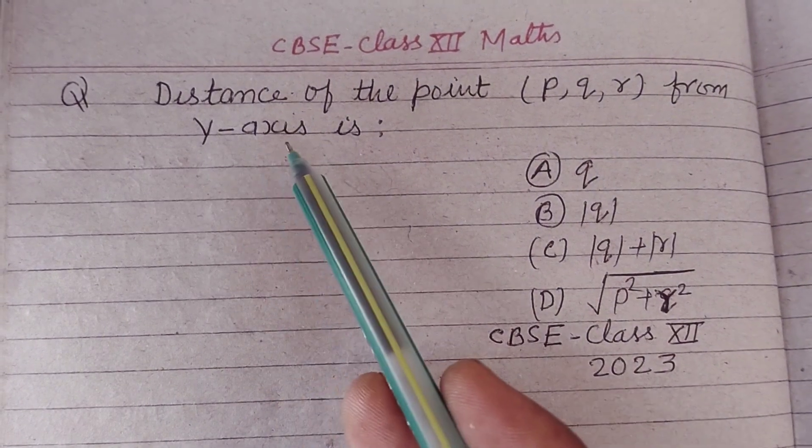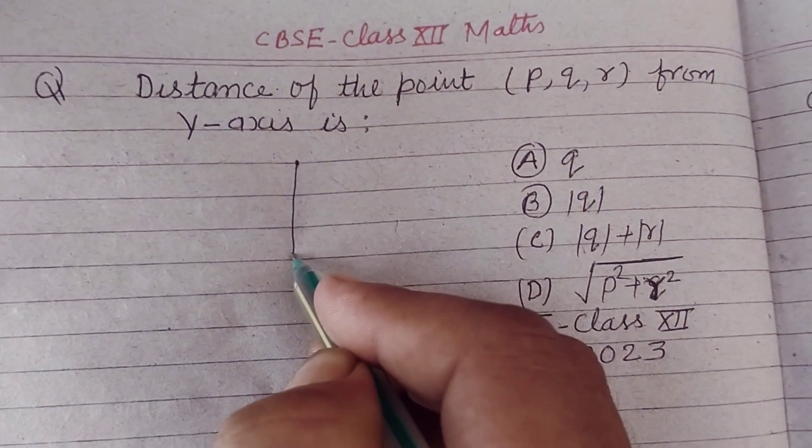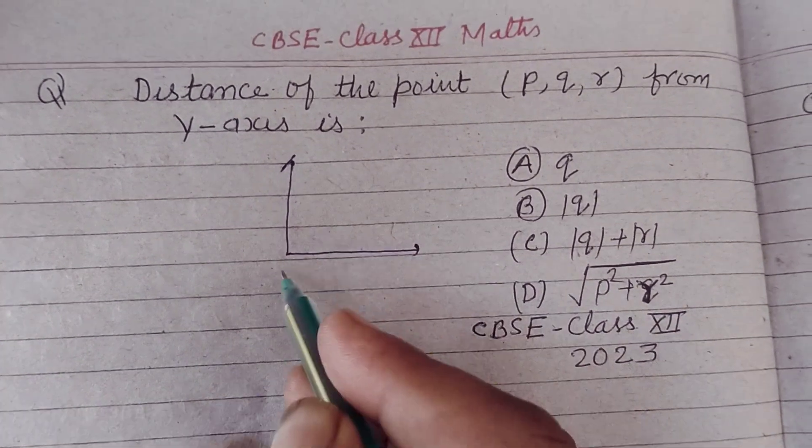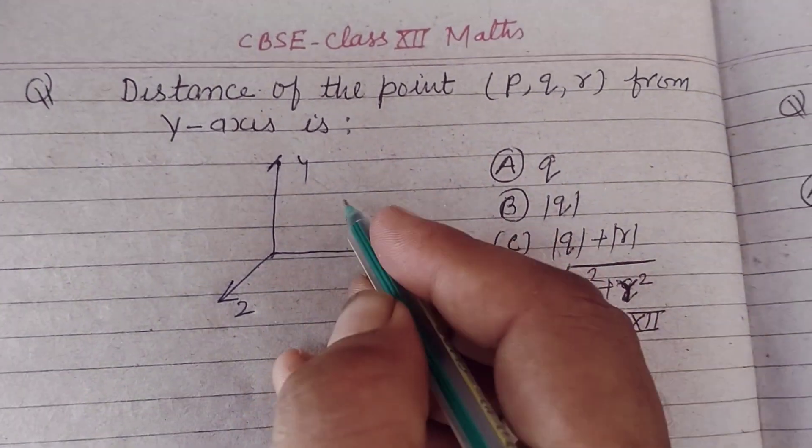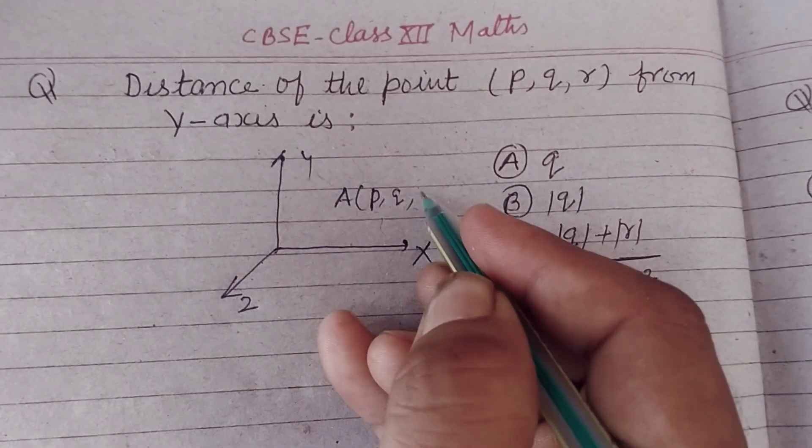from y-axis is. Students, we make the three-dimensional axis XYZ. A point which is given to us is (P,Q,R).